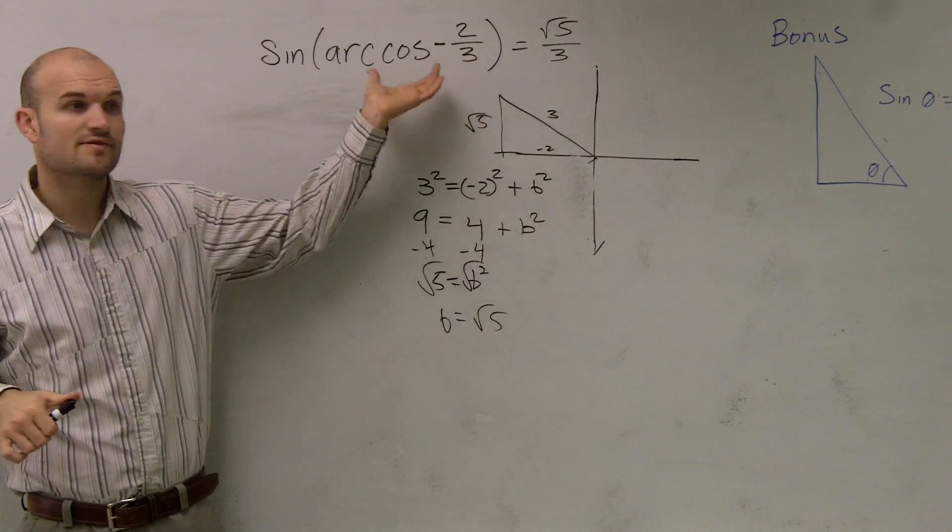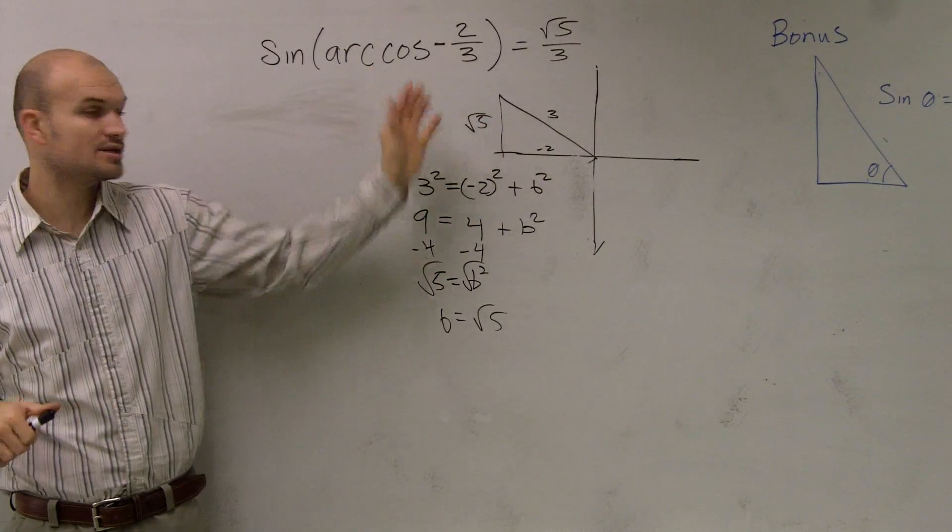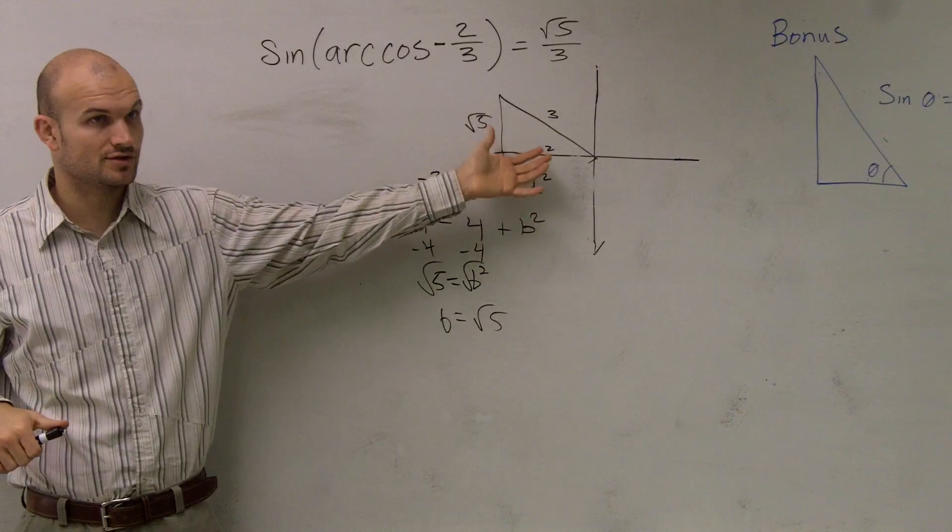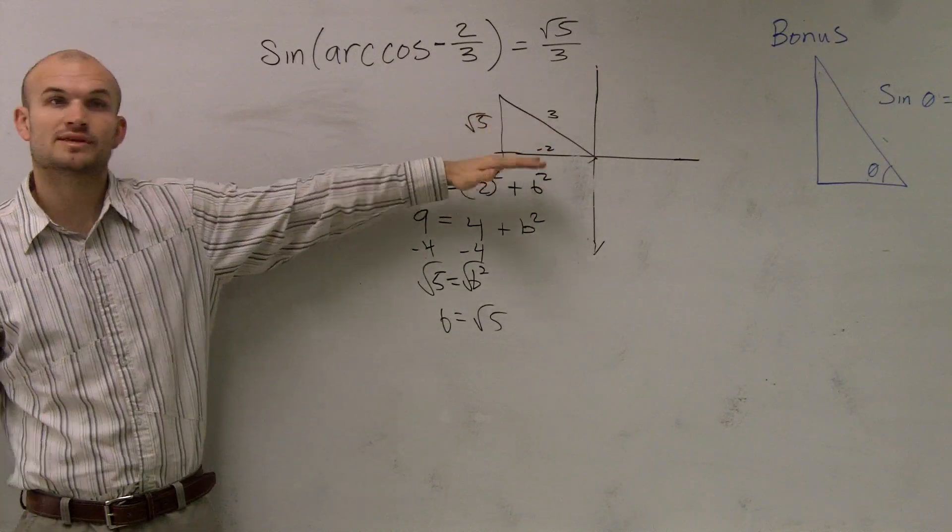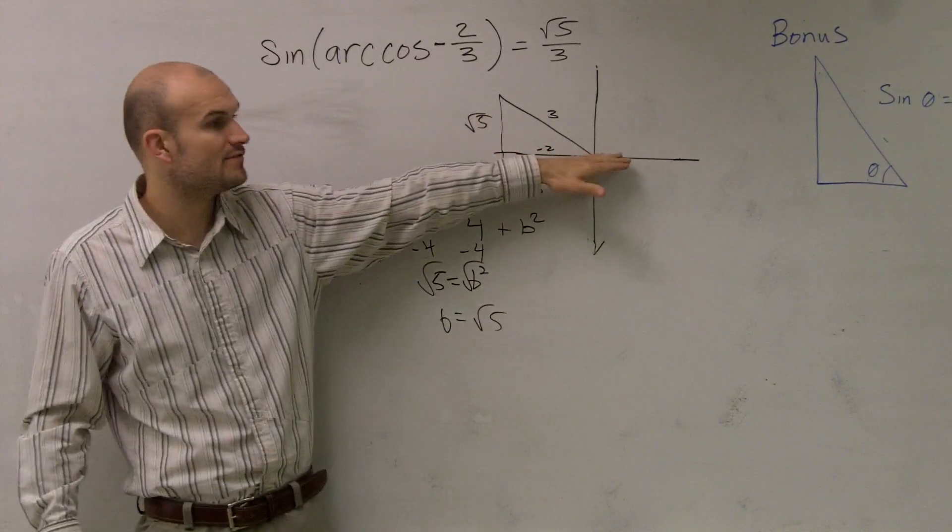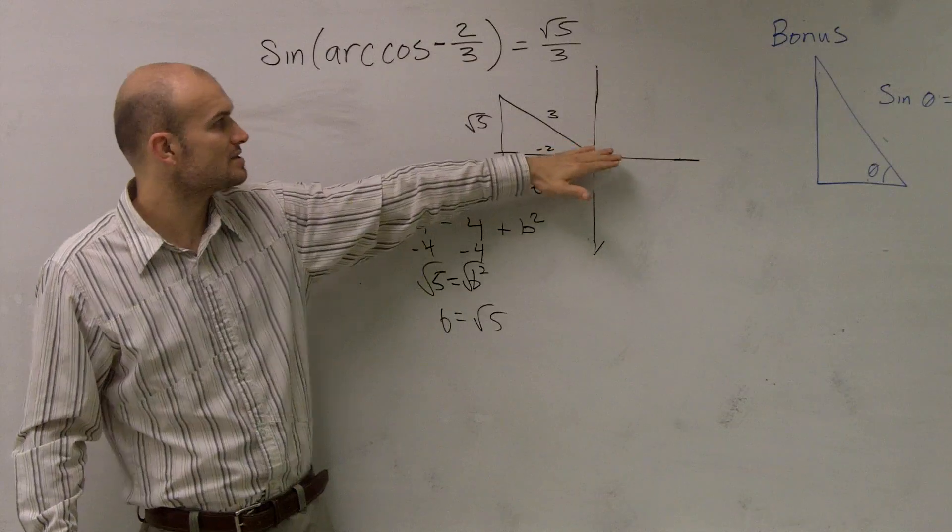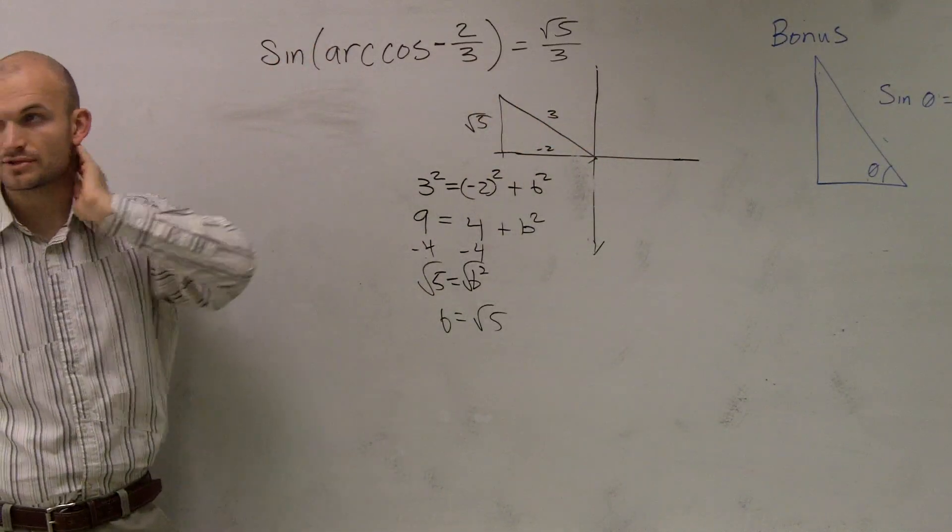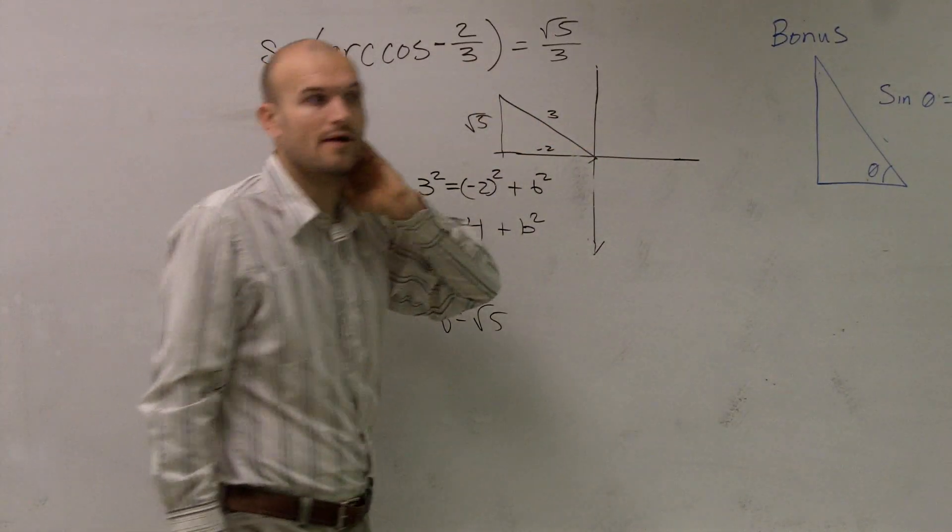So just find what your inverse is. Use your restriction to determine which triangle you're going to use, or make sure it's within your restriction of your inverse. And then just evaluate for your last triple. Okay?